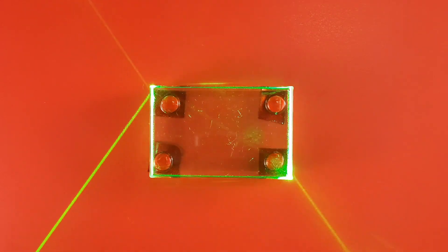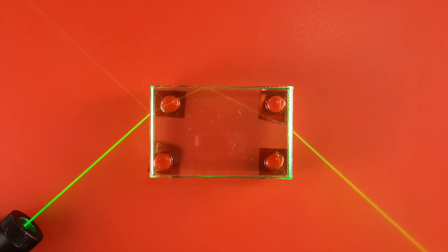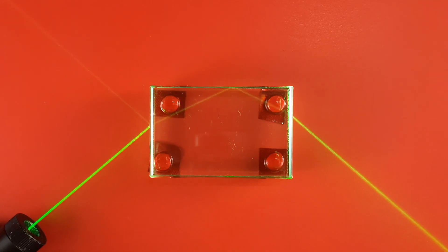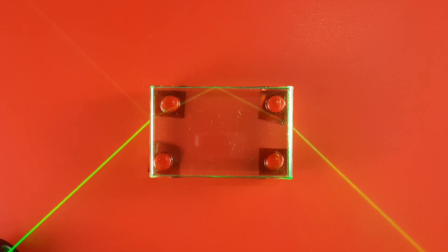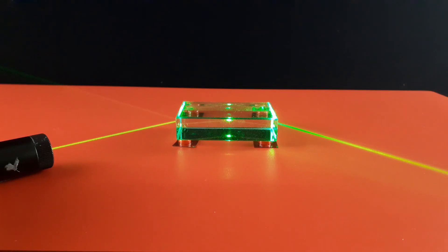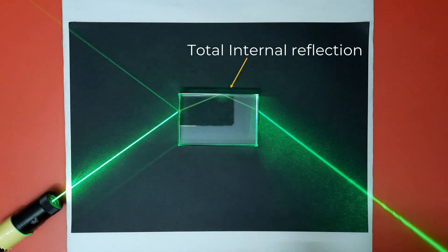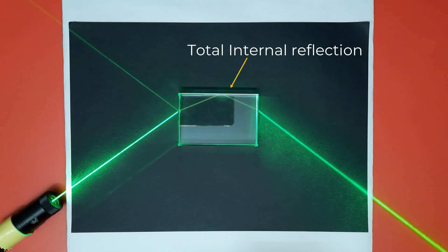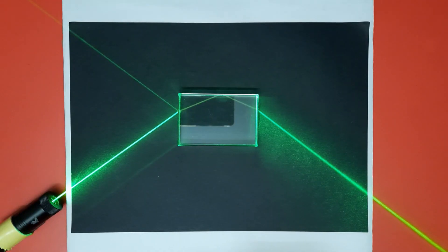Now something different will happen if we pass the laser beam from the adjacent side. See what happens — the laser reflects internally. If you observe carefully, it is not partial reflection or refraction, but total reflection of light is taking place. This phenomenon is known as total internal reflection.